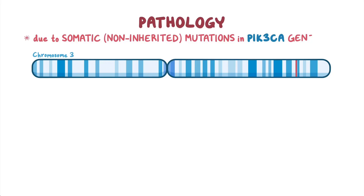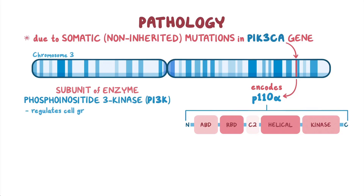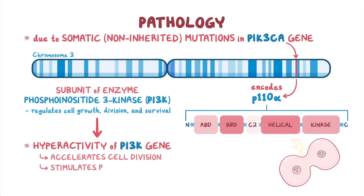PROS is due to somatic, or non-inherited, mutations in the PIK3CA gene, which encodes P110α. This is a subunit of the enzyme phosphoinositide-3 kinase, or PI3K, which regulates cell growth, division, and survival. These mutations result in hyperactivity of PI3K, which accelerates cell division and stimulates the production of growth factors and hormones, contributing to tissue overgrowth.